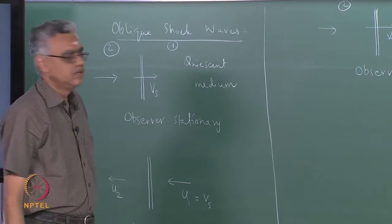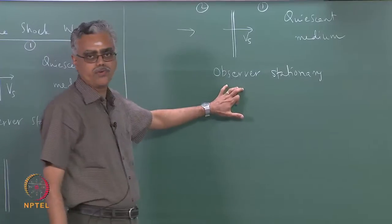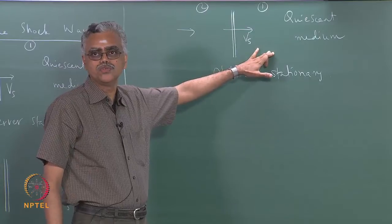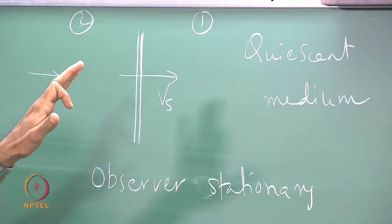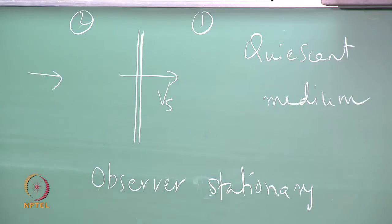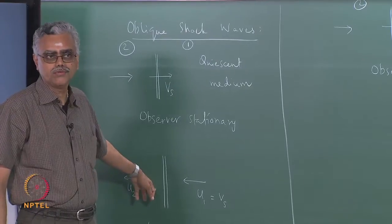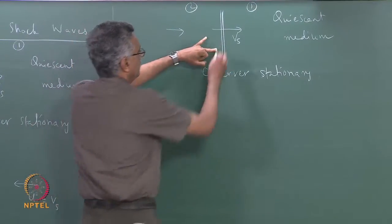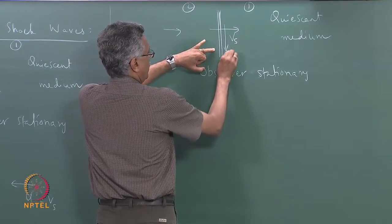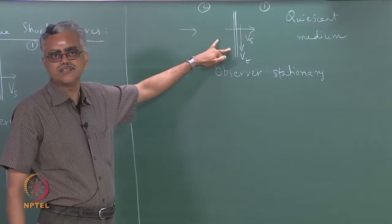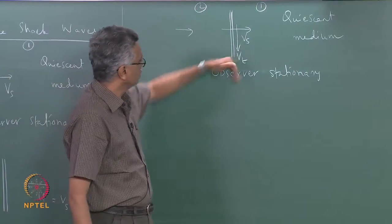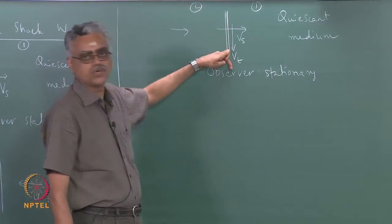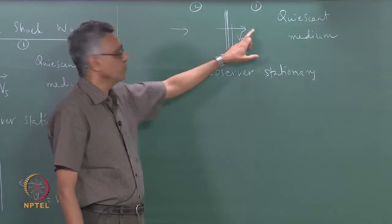Now let the observer move into a frame where not only does the observer move along with the shockwave, the observer also moves along the shockwave. Please notice the difference: here the observer moves along with the shockwave and also along the shockwave — traveling this way with a certain speed labeled V sub t. The observer can go either way; both are equivalent.